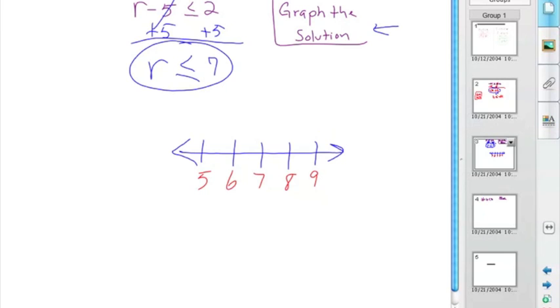Since r is less than or equal to 7, we're going to put the circle on 7. And if r is less than 7, we know that all the numbers below 7 satisfy our inequality. So, we make our big fat line, color it in like so.